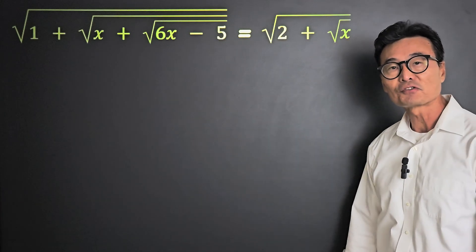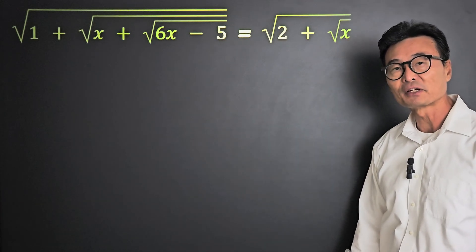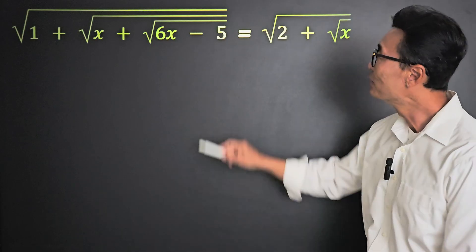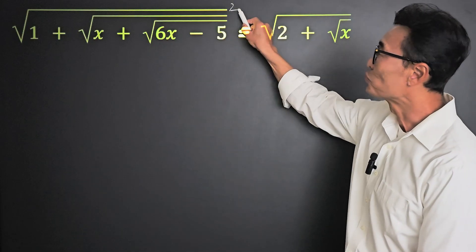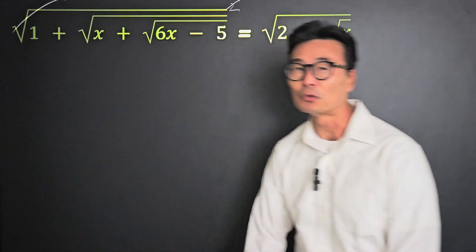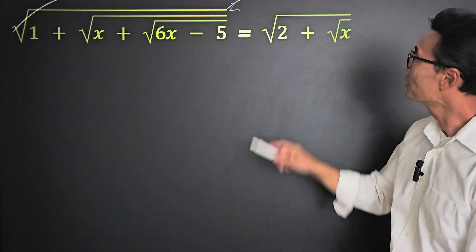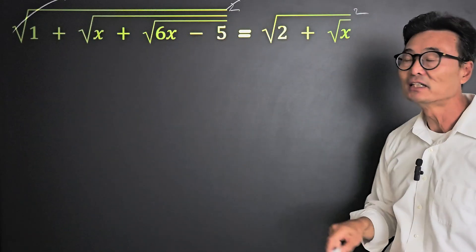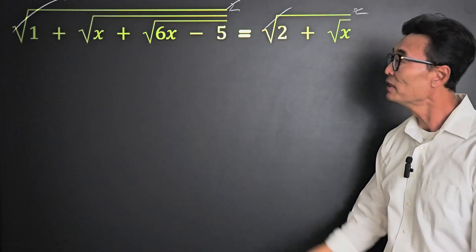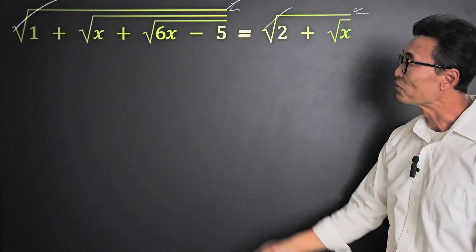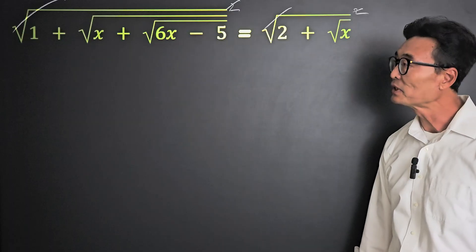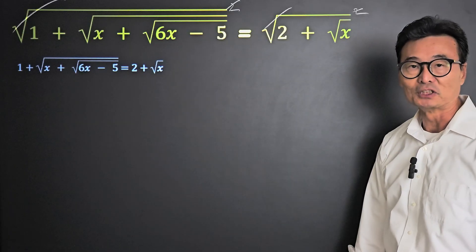To solve this equation, the first thing we want to do is get rid of the outermost square root sign. To do that, we'll square the left side, which will cancel out the outermost square root. And we have to do the same on the right side so that we could get rid of the square root on the outside. Once we get rid of the outermost square root signs, we end up with this equation.